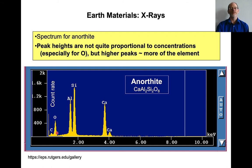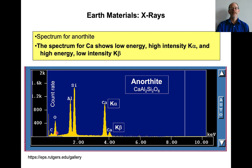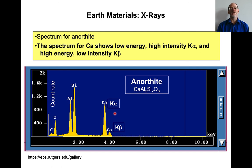Here you can see two peaks for calcium. The big peak is the K-alpha peak. It's more likely for an L-shell electron to fall into the K-shell hole than for an M-shell electron to fall into the K-shell hole, so this peak is higher. But if you're dropping an M-shell electron into the K-shell hole, you're generating more energy, so the K-beta energy is higher. This illustrates the relative intensities and energies of the K-alpha and K-beta peaks.